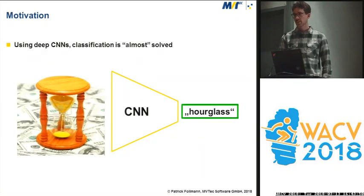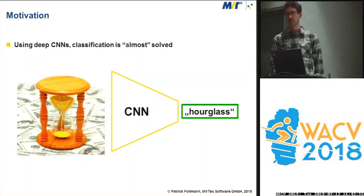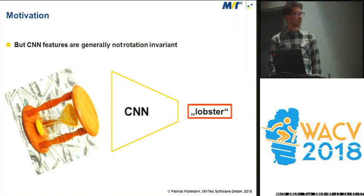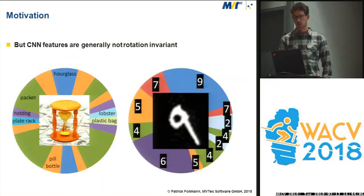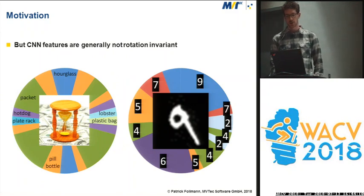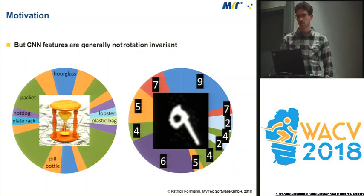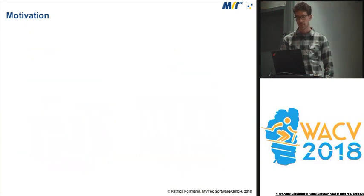If you see an image like this, it will be no surprise that a CNN pre-trained on ImageNet can classify it correctly. But if you rotate the image, you will get a surprise because the image will not be classified correctly. If you rotate the images in steps of 10 degrees, you get various different results, but only sometimes the correct one. This is due to the fact that CNN features are generally not rotationally invariant, and this is also the motivation for our work.